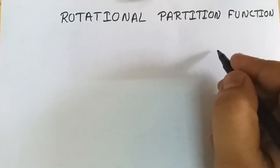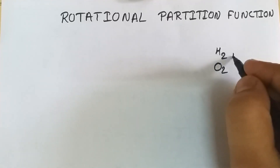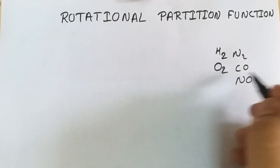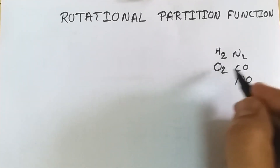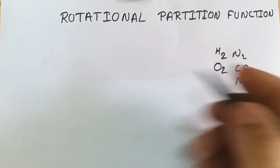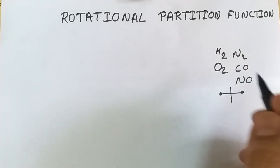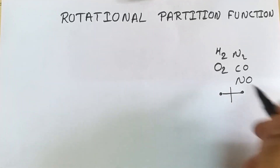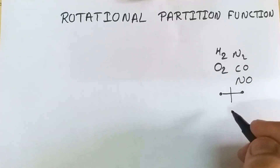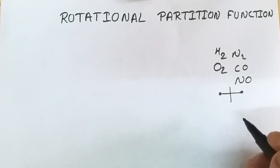For diatomic molecules like hydrogen, oxygen, nitrogen, carbon monoxide, or nitrous oxide, there are definite bonds between the two individual atoms. These molecules will rotate around that axis — suppose we have one atom over here and another atom linked by a bond, so they rotate around the central axis. This type of rotation is considered, and the energy associated with it is known as rotational energy.